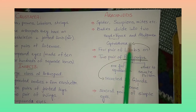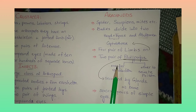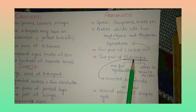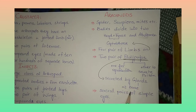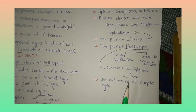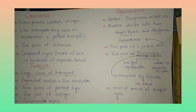Arachnids have four pairs of limbs on the cephalothorax and two pairs of pedipalps present on the front upper side of the organism. One pair of pedipalps is used for reproduction and the other secretes poison to paralyze prey, secreted by glands at the base. Arachnids also possess only simple eyes — they do not have compound eyes.